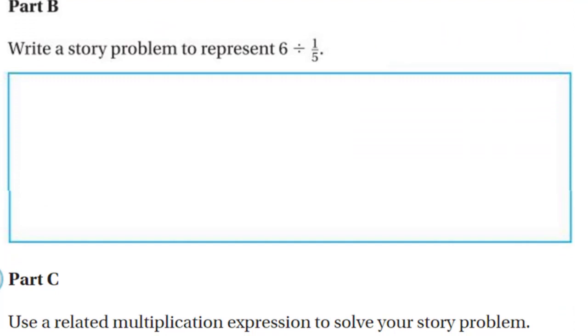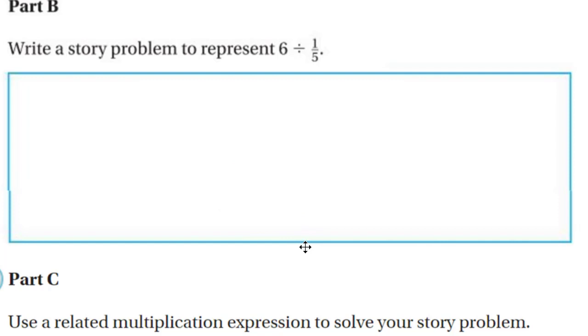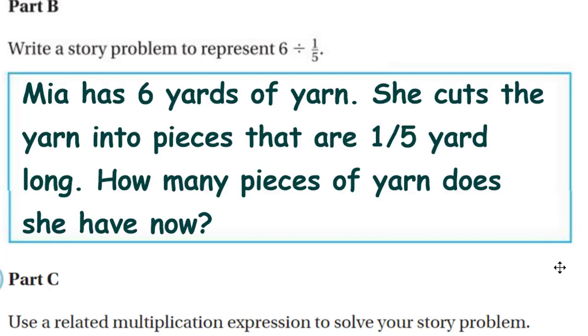For part B, it says write a story problem to represent six divided by one fifth. Well, let me see here. I saw some students doing some yarn the other day. I'll use the yarn. How about let's say that Mia has six yards of yarn. Six yards of yarn, sounds like a tongue twister there. She cuts the yarn into pieces that are one fifth yard long. How many pieces of yarn does she have now? That could be a common example. So let me see if I can't write that up really quick. And there you go. There is my story problem.